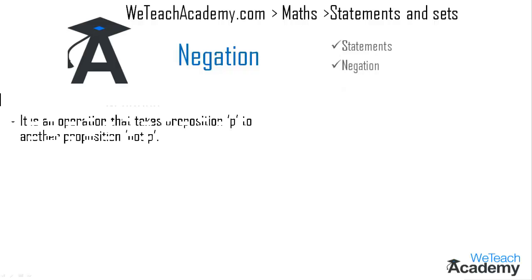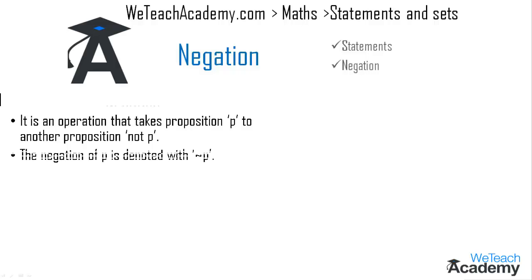A negation can be defined as an operation that takes proposition p to another proposition not p, and the negation of p is denoted with not p. We can also define negation with the help of a truth table.